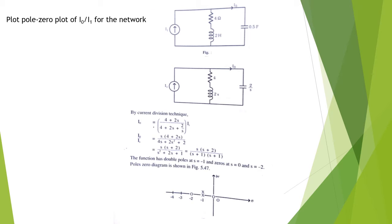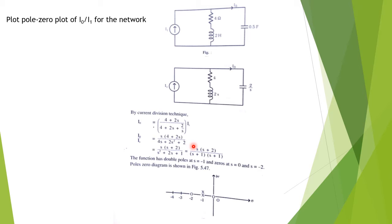Here we have an example where a network is given and we must find the network function I0/I1 and then obtain the pole-zero plot. All impedances are transformed in the s-domain. I0 is the current through the impedance 2/s and I1 is the total current. Applying the current division formula, I0 equals I1 multiplied by the opposite impedance (4 + 2s) in the numerator, divided by the sum of all three impedances (4 + 2s + 2/s). The ratio I0/I1 is factorized as s(s+2) / [(s+1)(s+1)].